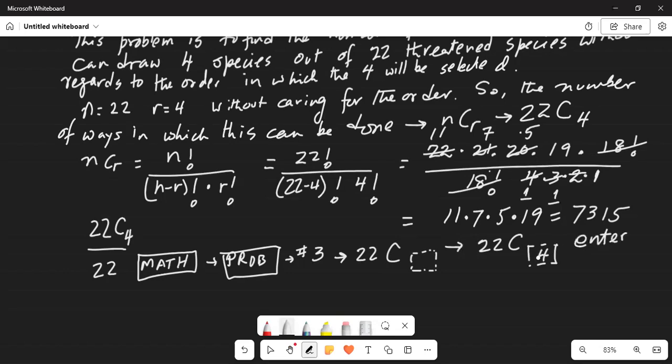So you're typing the 4 which is the 4 items selected out of 22 and you're using C because ordering is not important.